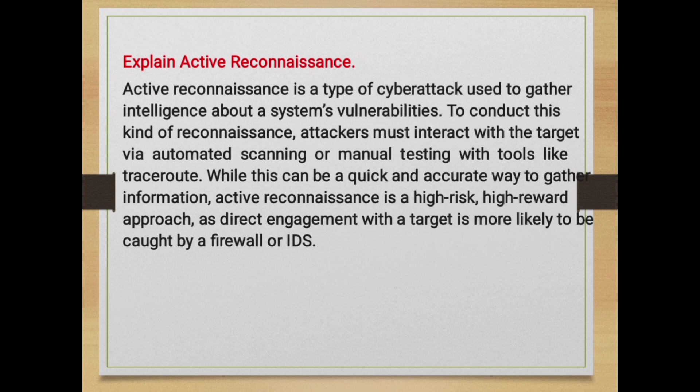Explain active reconnaissance. Active reconnaissance is a type of cyber attack used to gather intelligence about a system's vulnerabilities. To conduct this kind of reconnaissance, attackers must interact with the target via automated scanning or manual testing with tools like Traceroute. While this can be a quick and accurate way to gather information, active reconnaissance is a high-risk, high-reward approach, as direct engagement with the target is more likely to be caught by a firewall or IDS.